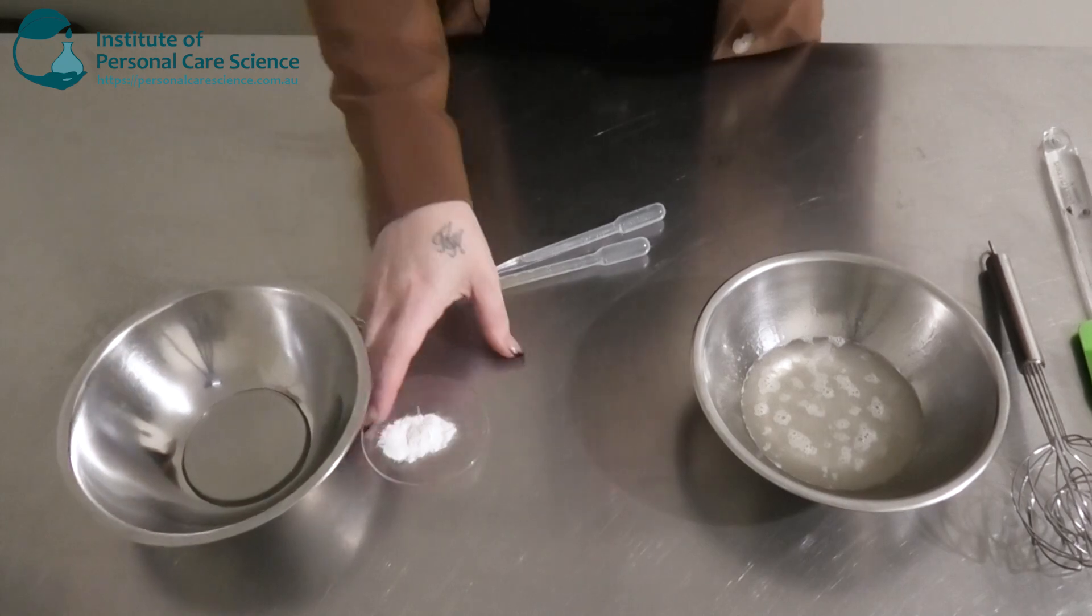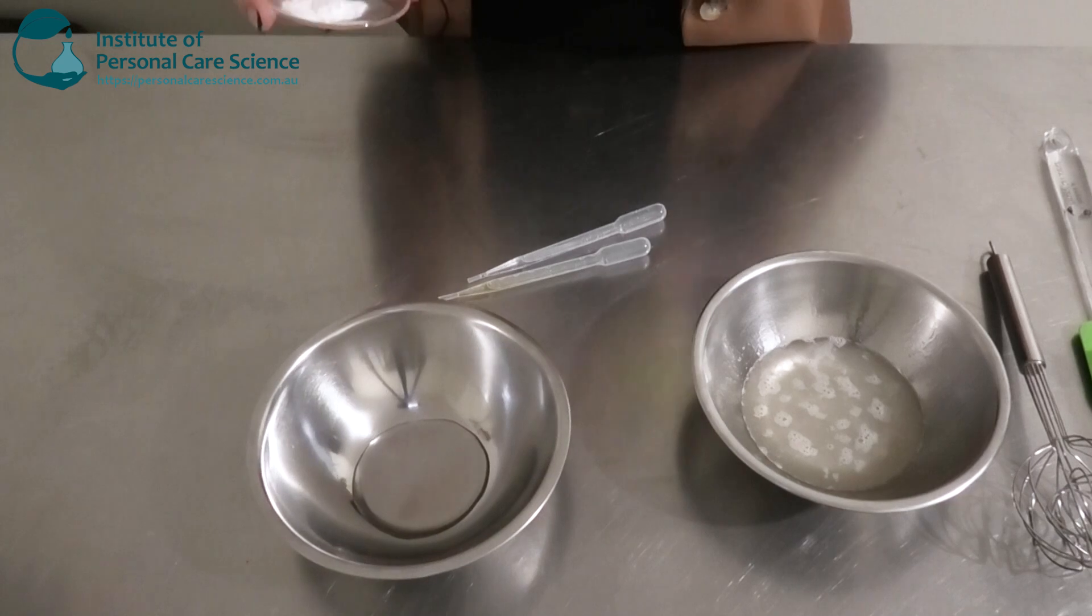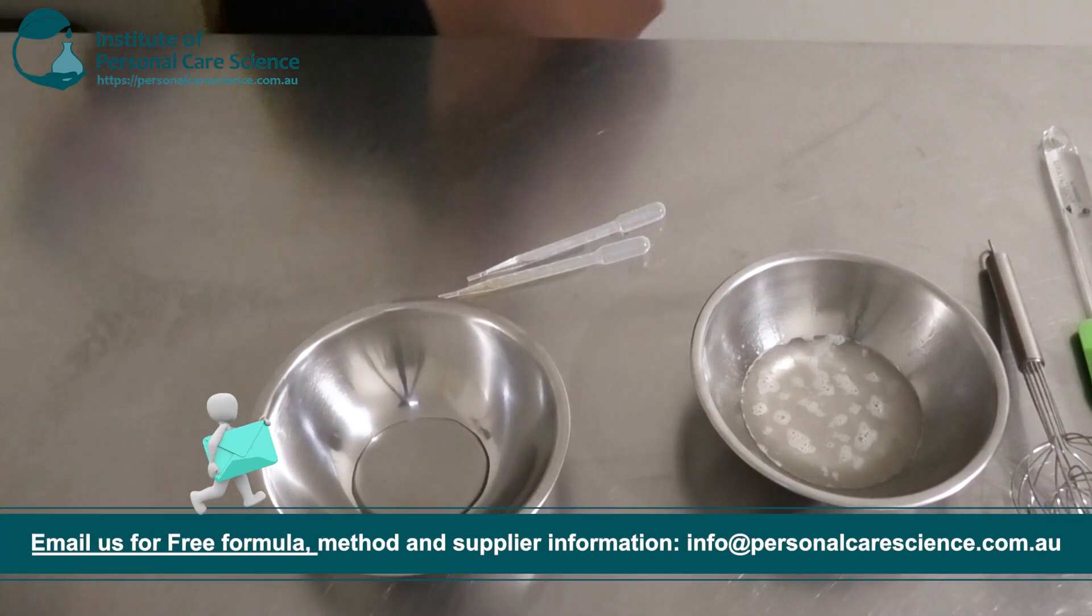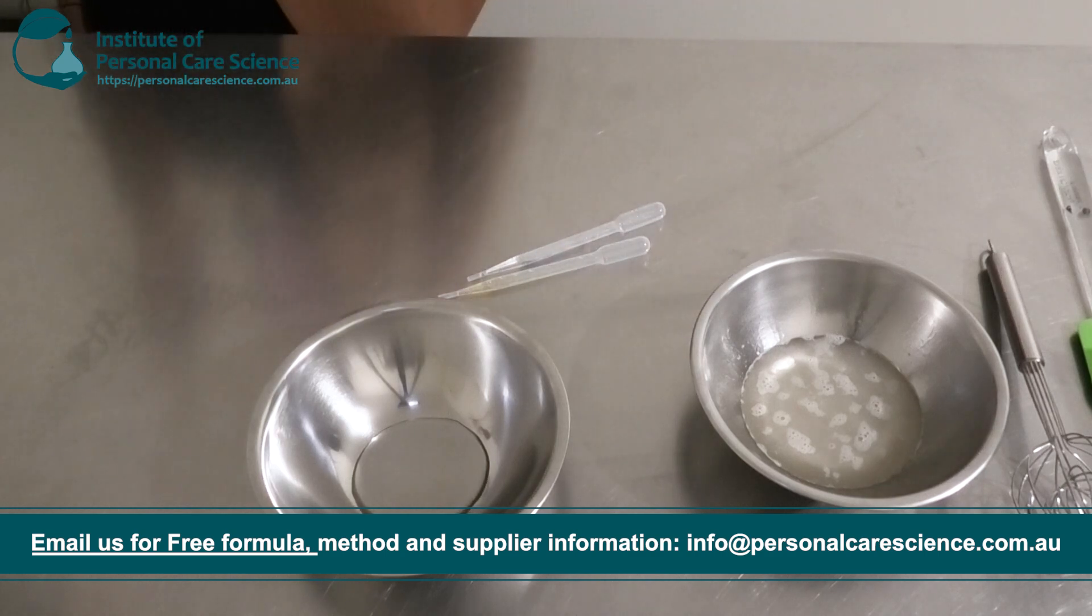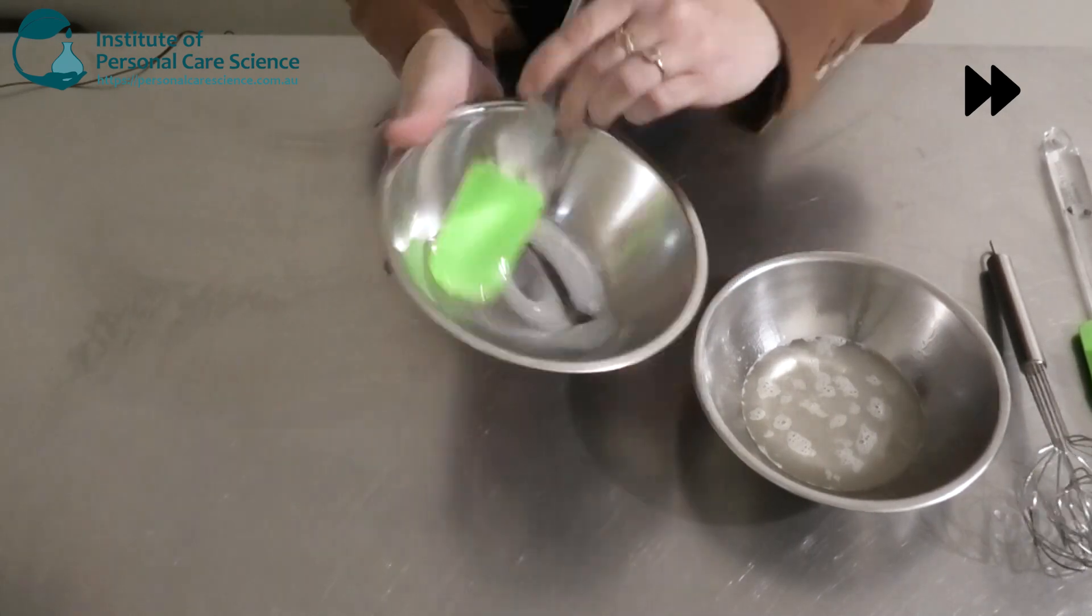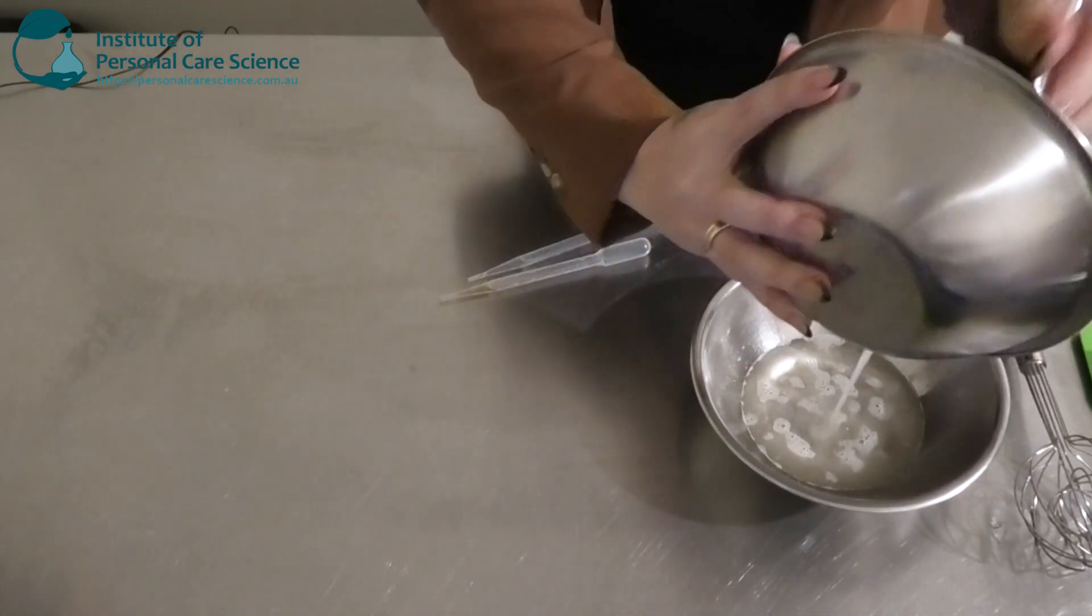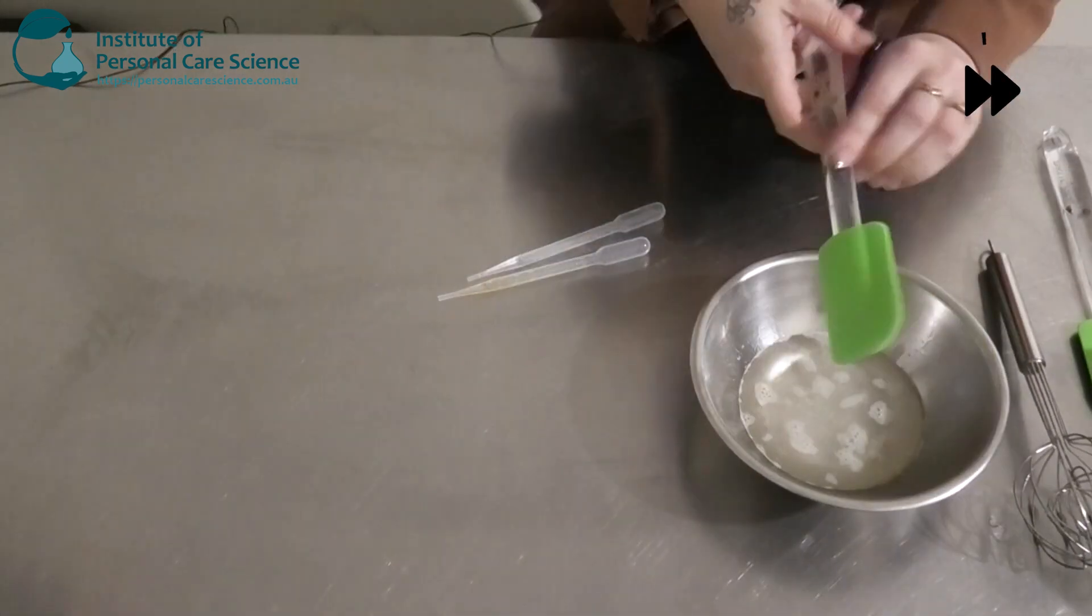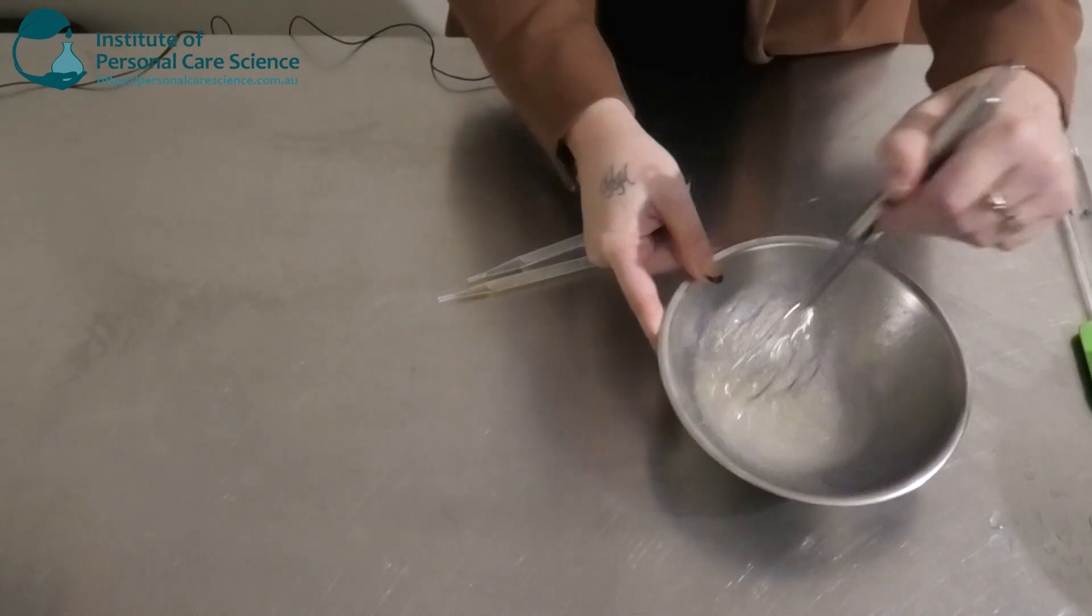Now I'm going to add a gum to add viscosity and stabilize my body wash. I'm using Veegum Xanthan and adding it to quite a high input of glycerin. Remember, with the polyquot and glycerin, we're using high inputs because it is diluted upon use, so we need to increase the input more than usual. Once you've got a nice smooth slurry, we'll add it to our surfactant base and give that a good stir until the gum is homogeneous.